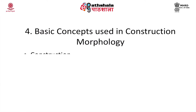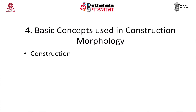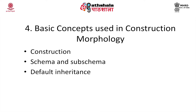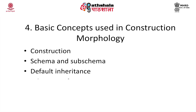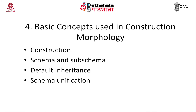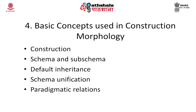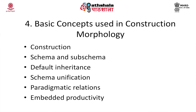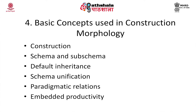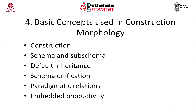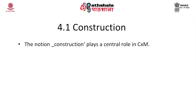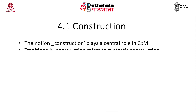Now I will look at the basic concepts of construction morphology. As introduced, these concepts include: construction; schema and subschema; the notion of default inheritance; schema unification; paradigmatic relations; and embedded productivity. These six key concepts are used in construction morphology. First, the notion of construction plays a central role in construction morphology.